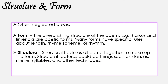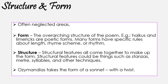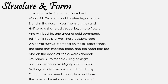Form and structure are closely linked, because you usually need to look at the structure in order to determine the form. Form is the overarching structure of a poem, rather than individual word-level structural features. For example, a poem could take the form of a limerick, a haiku, or an acrostic poem. In the case of Ozymandias, the form is that of a sonnet, but with a twist. So let's now take a look at some more specific structural features.